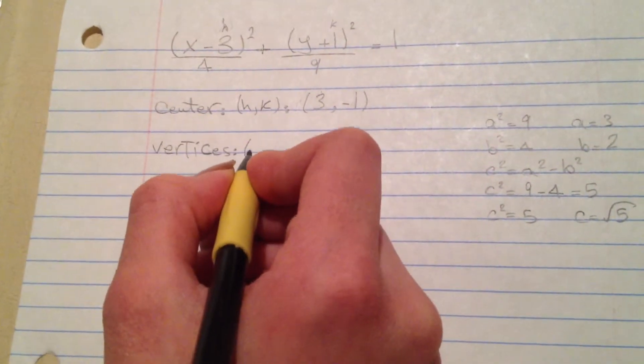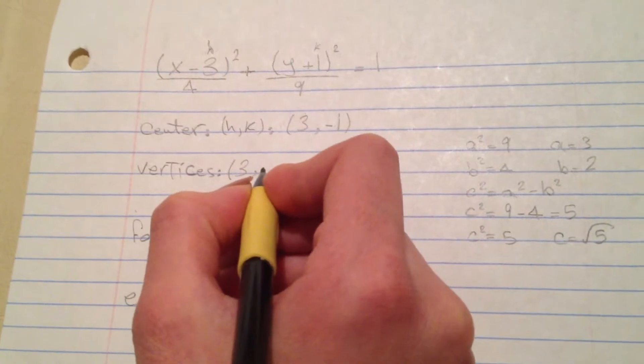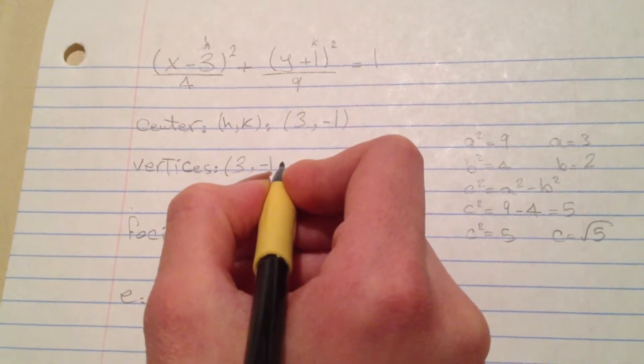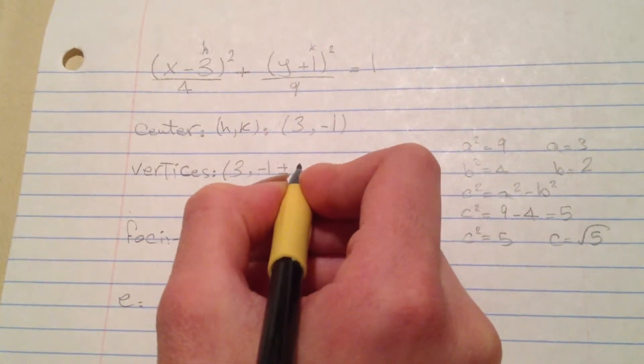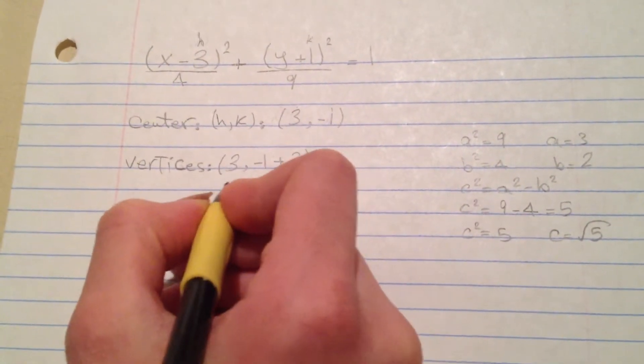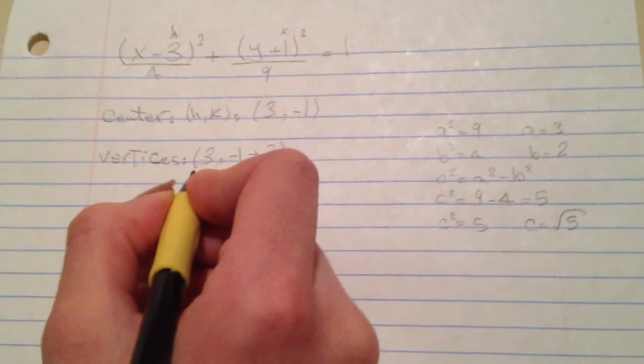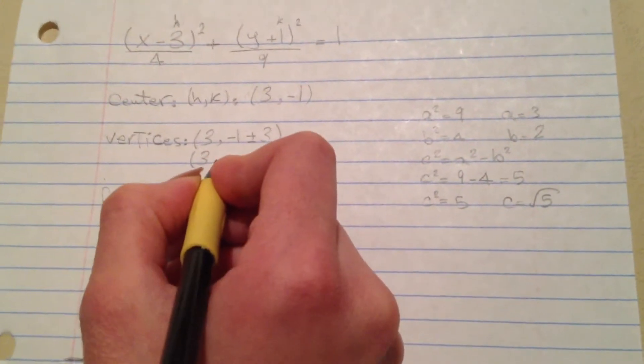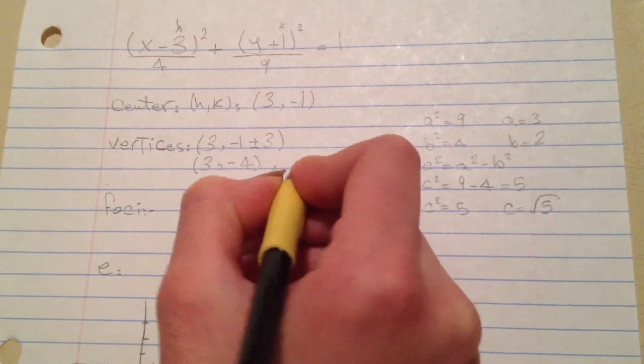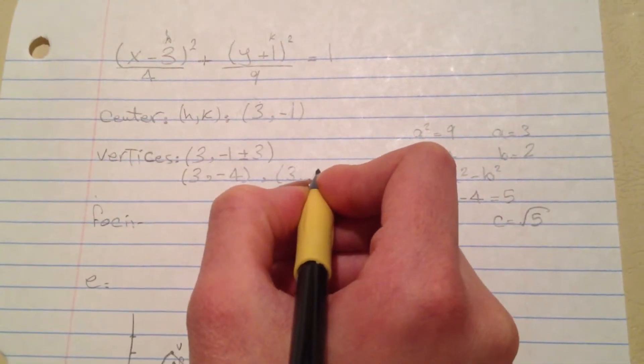To find the vertices we have to do 3 comma negative 1 plus or minus 3, which is the 3 we took from the a. So our points are 3 negative 4 and 3 comma 2.